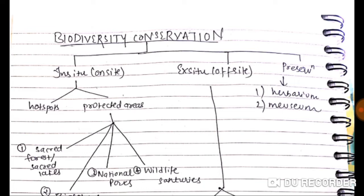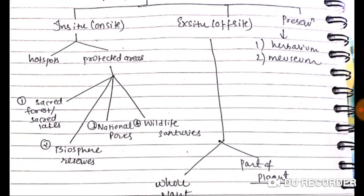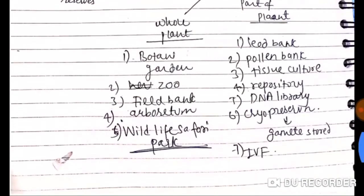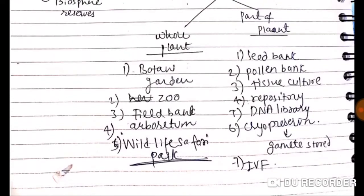In ex-situ conservation, biodiversity is preserved via herbaria and museums. In in-situ conservation — on-site, in the natural habitat — we have hotspots and protected areas. Protected areas include sacred forests, sacred lakes, biosphere reserves, national parks, and wildlife sanctuaries. In ex-situ conservation, we can save either a whole plant (botanical garden), whole animal (zoological park), field bank, herbarium, or wildlife safari park.